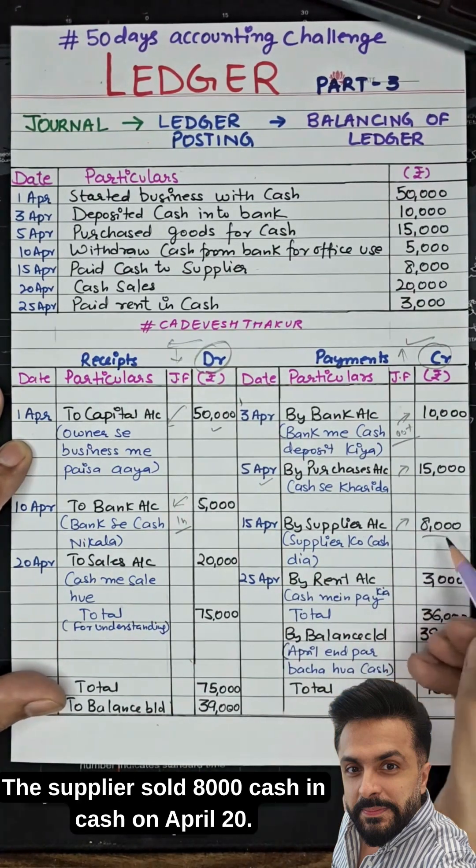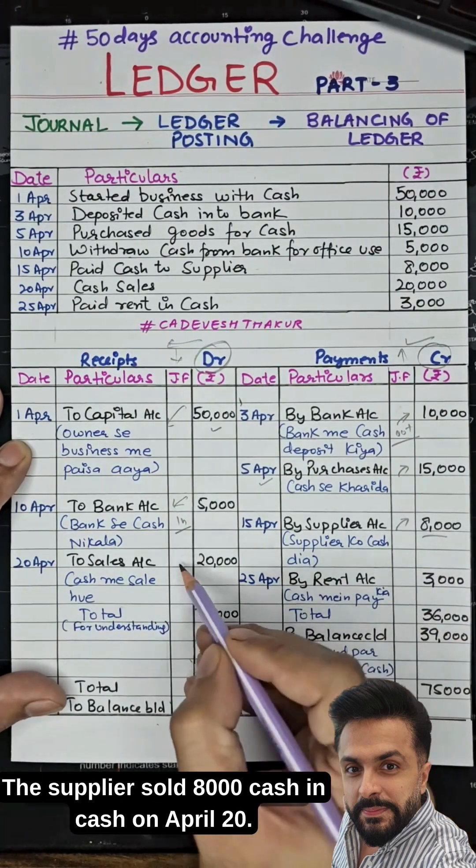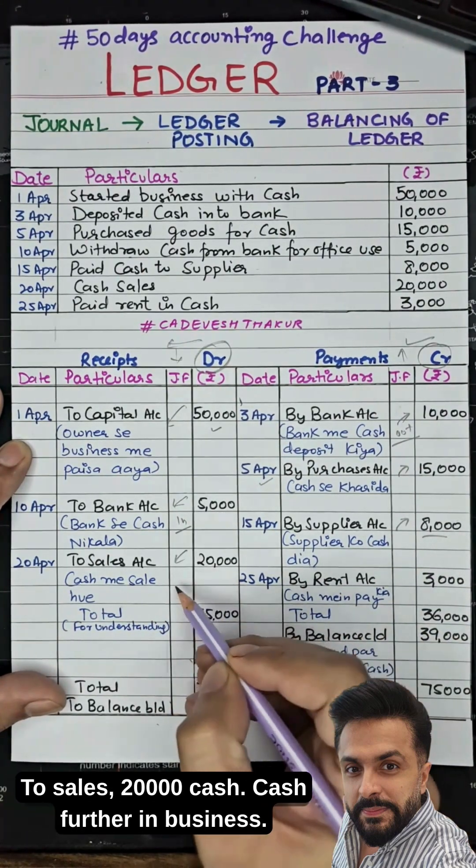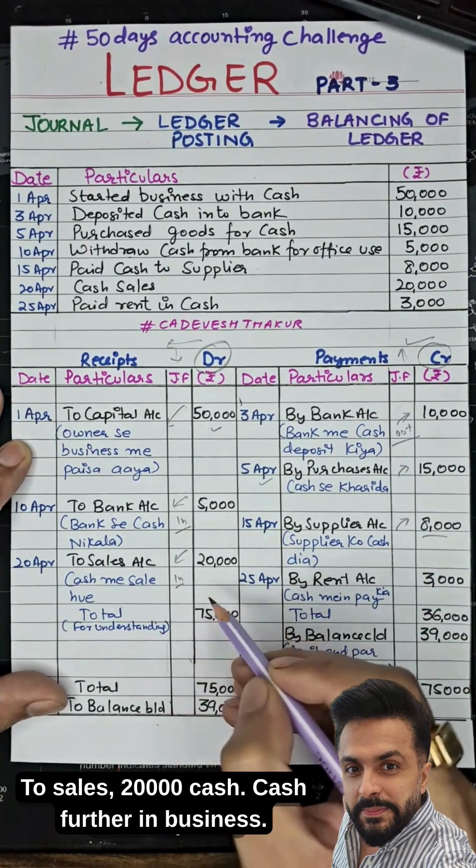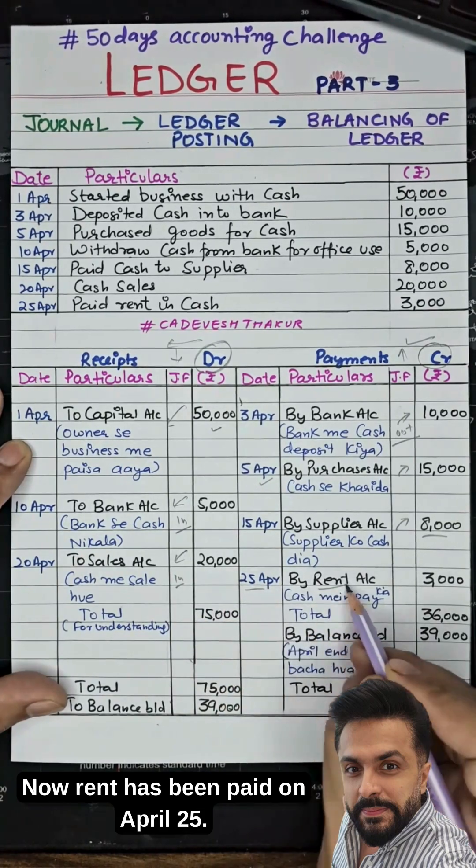On April 20th, goods were sold for cash. Sales brought in RS20,000 cash into the business — this is a cash inflow recorded on the debit side.